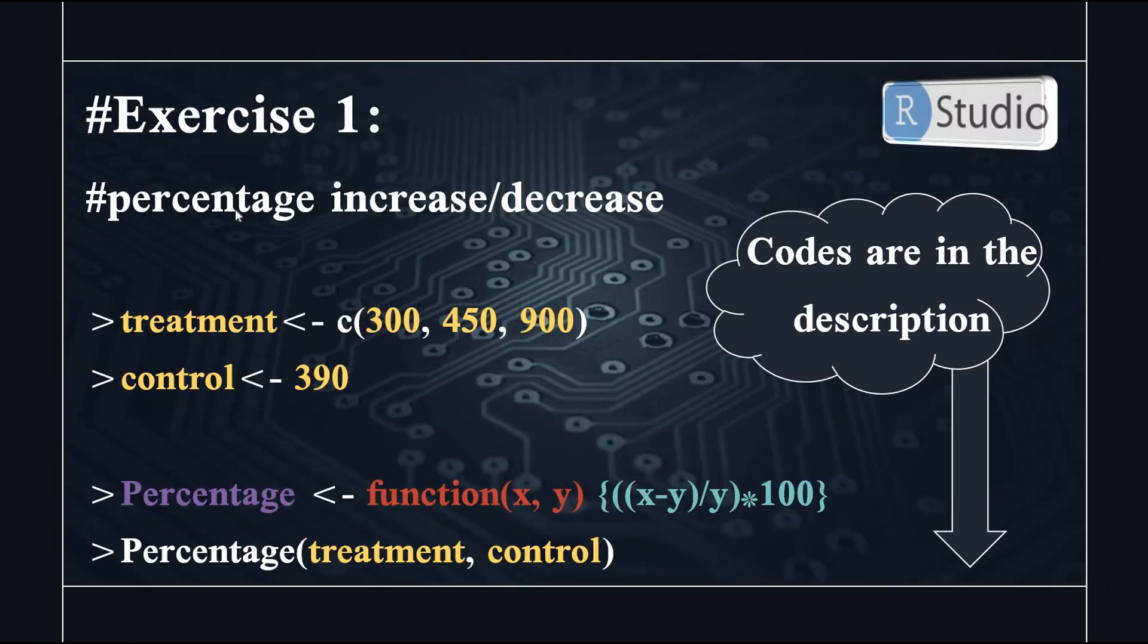So in exercise one, we will calculate the percentage increase and decrease. The codes are in the description. You can copy them and paste them in your R script. So here we assign a vector of three numbers to treatment and we assign a numeric number to the control. So our function name is percentage. We have two inputs x and y and this is our instruction. We are telling R, take these two numbers and apply this equation to it and give me the result.